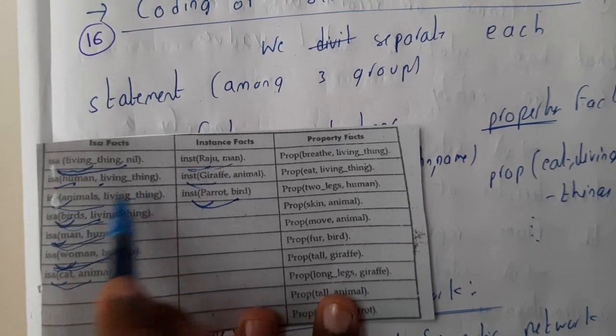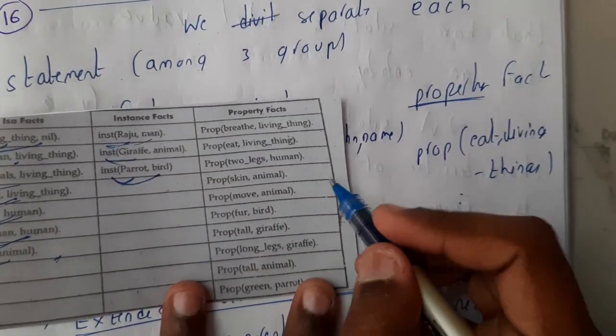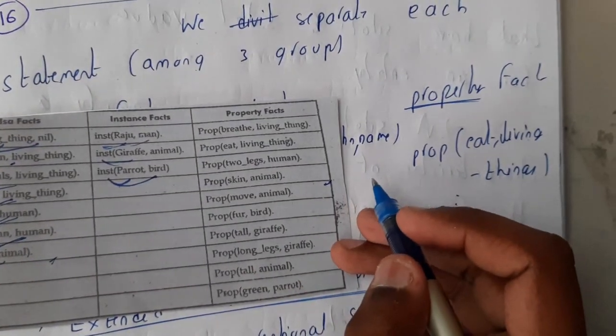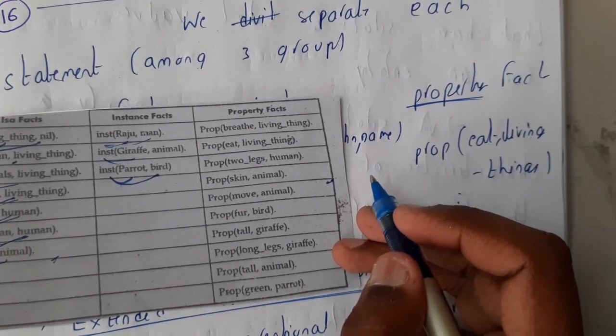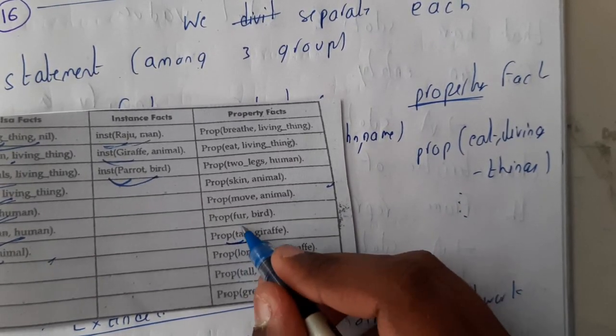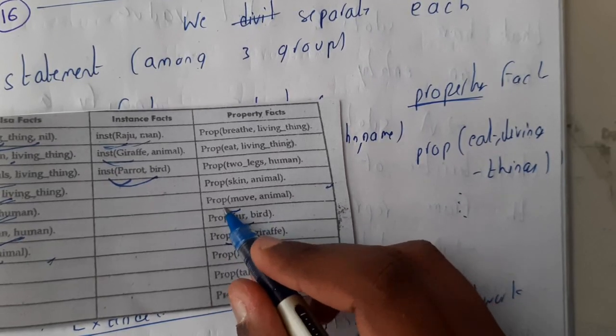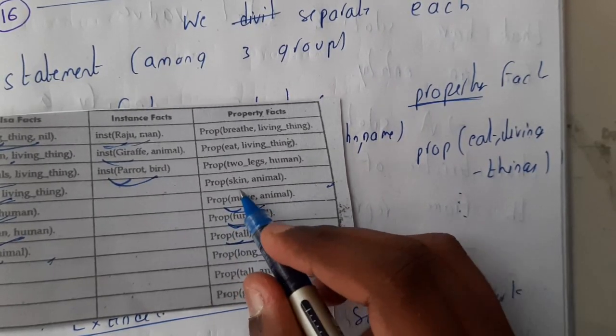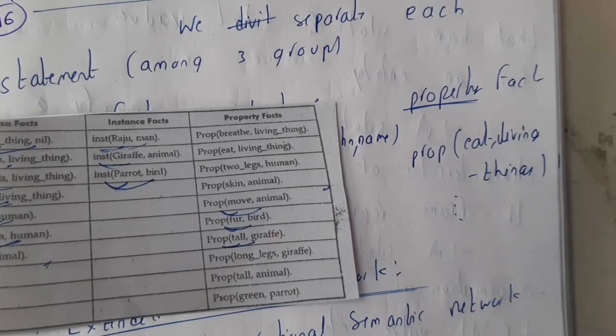Whereas property is nothing but it belongs to appearance, like verbs. Giraffe is tall, so tall property belongs to giraffe. Fly property belongs to bird, move property belongs to animals, skin also belongs to animals. It is the property which is inbuilt in it.